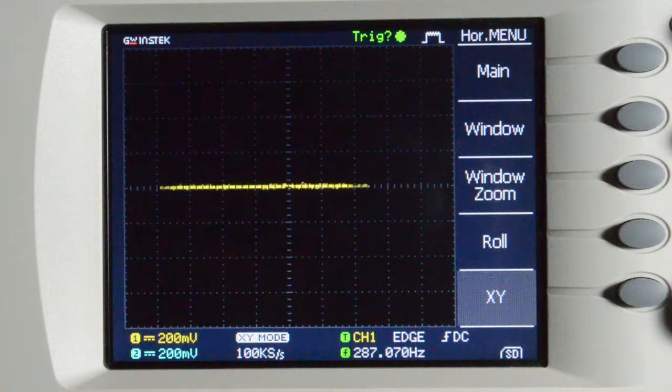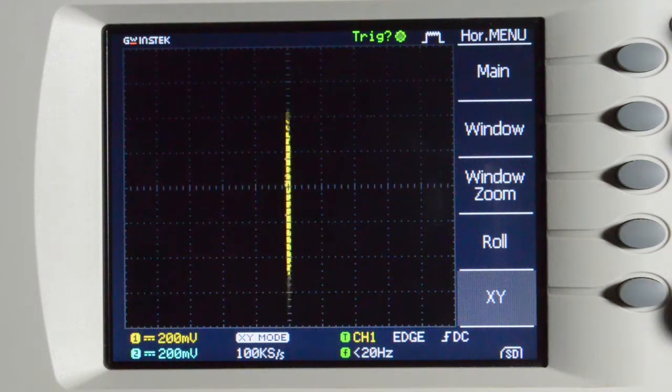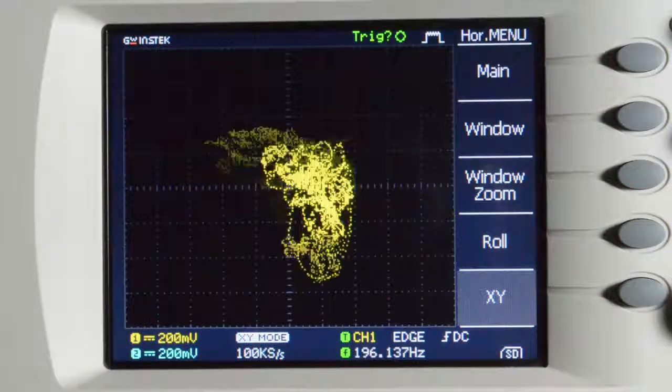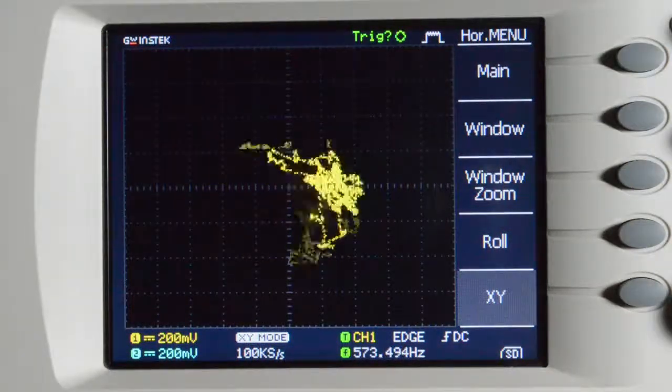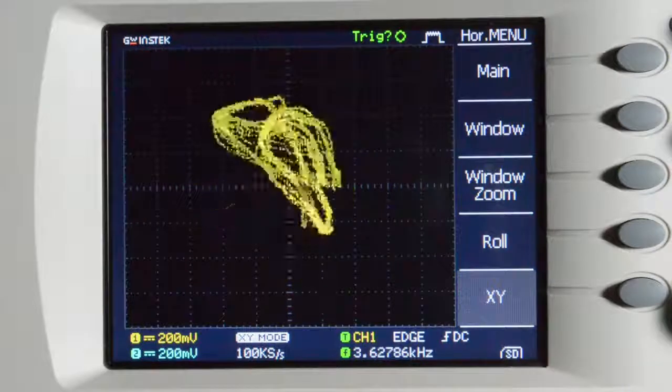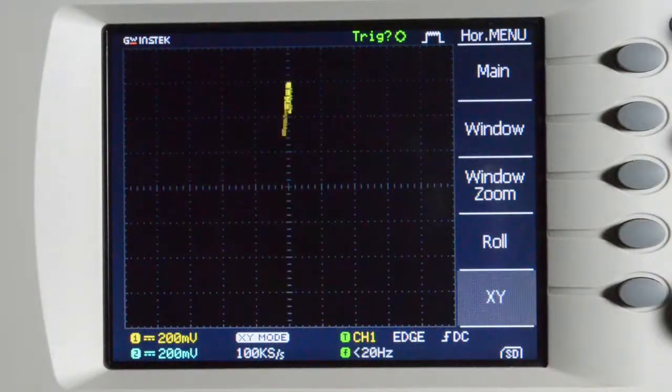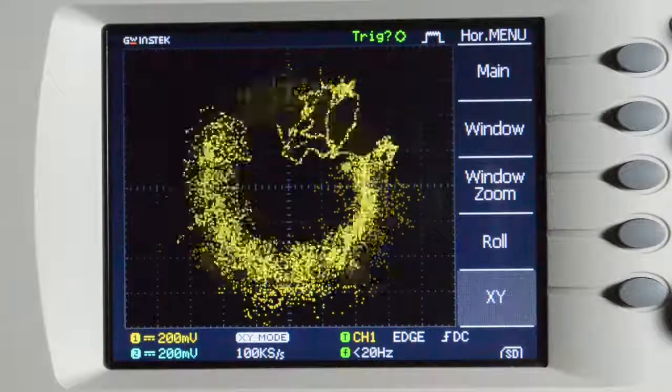We're gonna use our left audio channel for horizontal deflection, and our right audio channel for vertical deflection. Now first we need a sine wave on our horizontal deflection channel, and a cosine wave on our vertical deflection channel. Together, they add up to a beautiful circle.